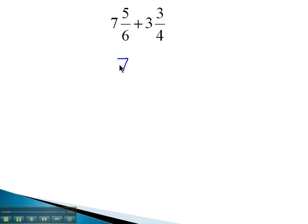Here, we're adding 7 and 5 sixths plus 3 and 3 fourths. Again, to add these, we need a common denominator on the fractions. The common denominator is going to be 12.